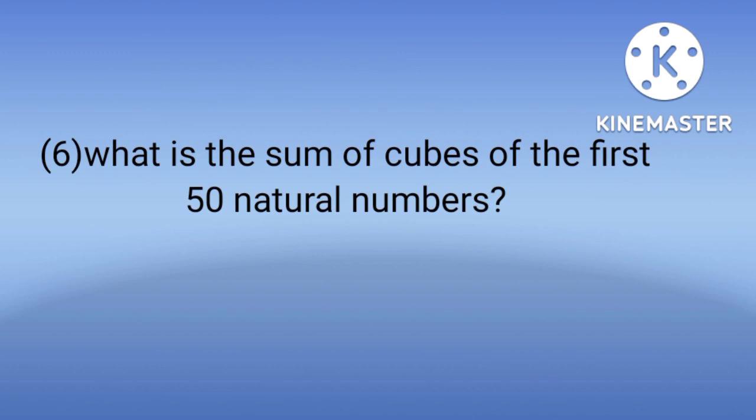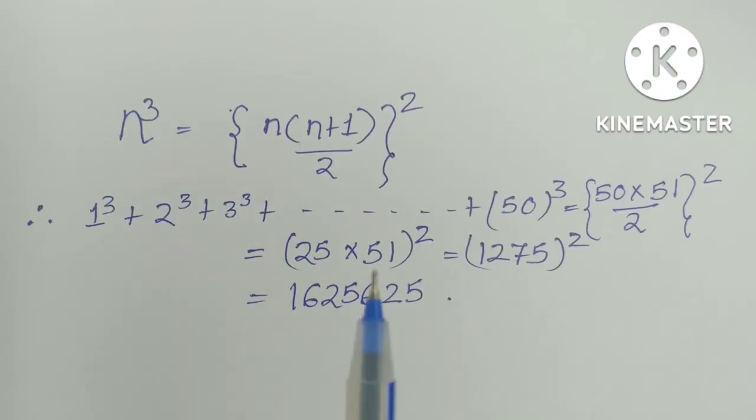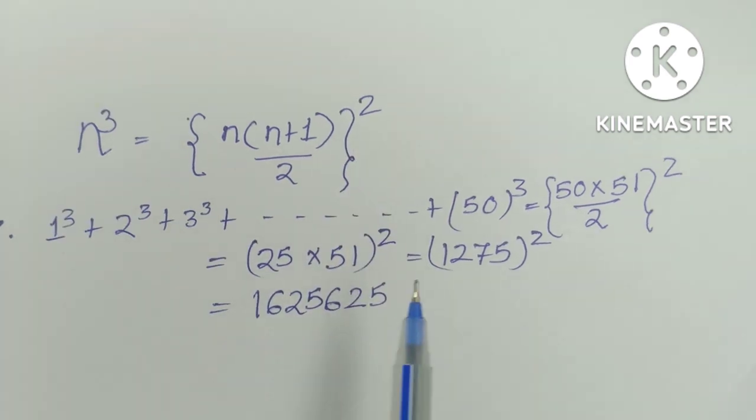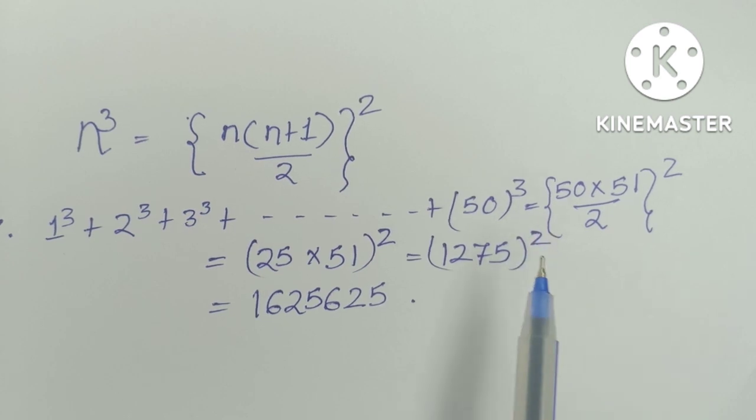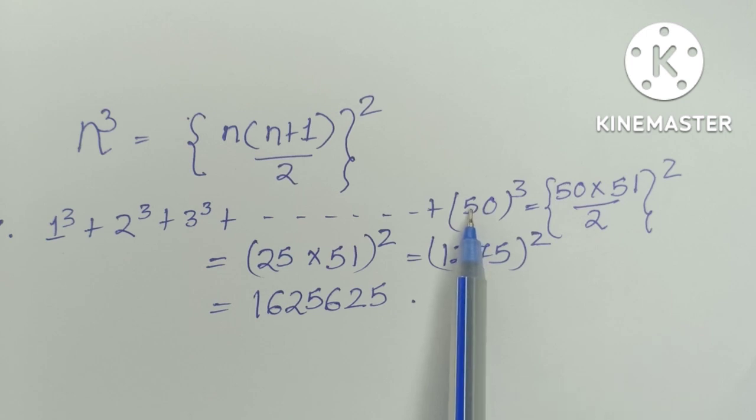Number 6: What is the sum of cubes of the first 50 natural numbers? These are the options. For typing questions like this, I will work it out on pen and paper. The formula for sum of cubes is N cube equals N into N plus 1 by 2 whole square. We need to find the sum of cubes of 50 natural numbers.